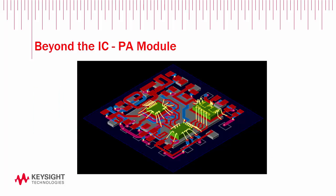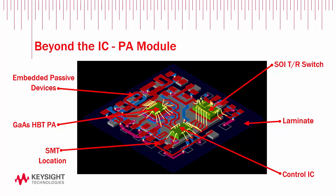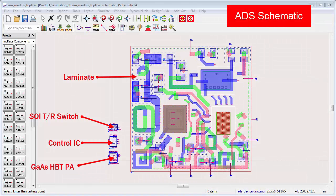Take, for example, this PA module. It consists of a GaAs-HBT PA, silicon-on-insulator transmit-receive switch, and a control IC, all on a four-layer laminate with additional surface mount devices and embedded passives. Through interoperability, the module designer can now easily bring the design collateral together and co-design with full fidelity.